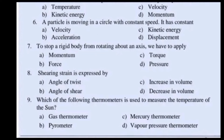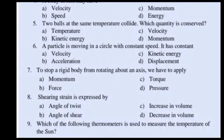What is the probability question? What is the hint? What is the answer? We will answer this. A particle is moving in a circle with a constant speed — it has constant acceleration.